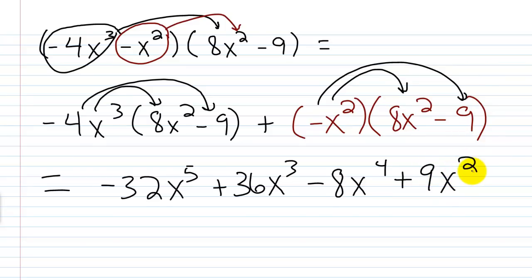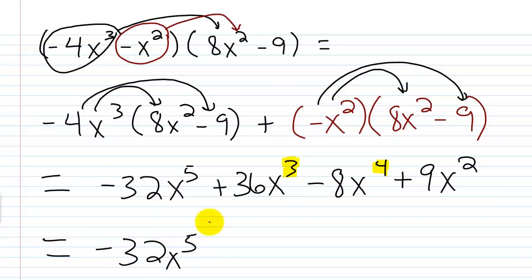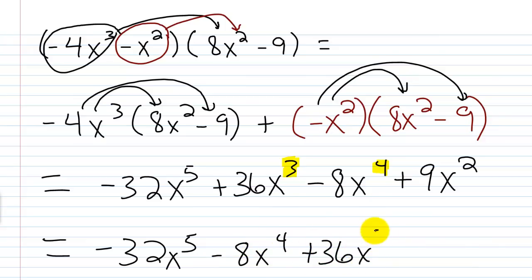We don't have any like terms to combine, but remember we always want to write our polynomial in standard form. This is not in standard form right now because x to the third and x to the fourth are out of order. So we rewrite this in standard form by switching the positions of 36x cubed and negative 8x to the fourth. Our final answer is negative 32x to the fifth minus 8x to the fourth plus 36x cubed plus 9x squared.